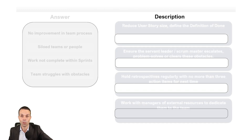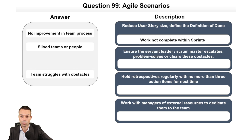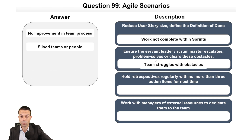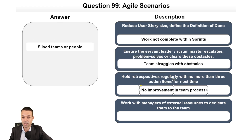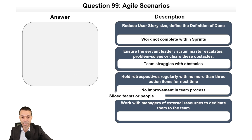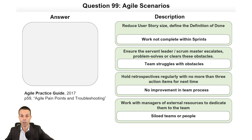More agile scenarios: if work is not completed within sprints, reduce the story size and ensure the definition of done is crisp. If the team is struggling with obstacles, ensure the servant leader or scrum master escalates and clears those blockers. For no improvement in team process, hold retrospectives regularly with no more than three action items. For siloed teams, work with managers of external resources to dedicate them to the team using the whole team approach. That's page 59 of the Agile Practice Guide.